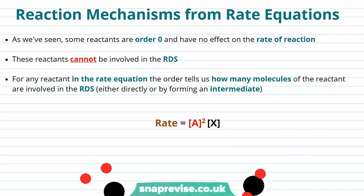We've talked about reaction mechanisms in our analogy, but now let's see what they look like in a more chemical sense. As we've seen in previous videos, some reactants are order zero and they have no effect on the rate of reaction. These reactants cannot be involved in the rate determining step. RDS here is short for rate determining step and we'll use this contraction throughout the rest of the video. For any reactant in the rate equation, the order tells us how many molecules of the reactant are involved in the rate determining step. These can be directly involved, or they could form an intermediate in another step and then this could be the thing that's in the rate determining step.